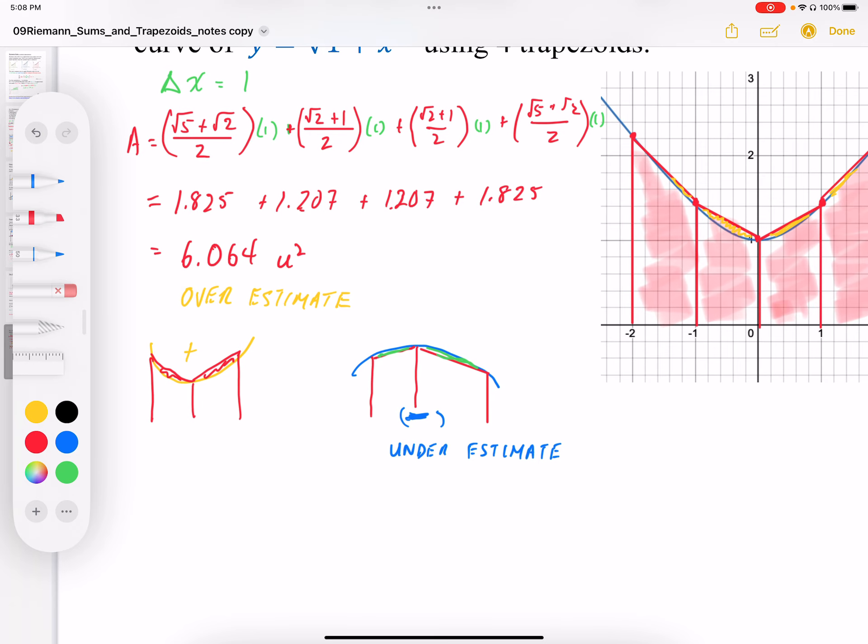It's important to know what the criteria was. With Riemann sums, it was slope, up or down. With trapezoids, it's going to be the concavity. Is it concave up versus concave down?